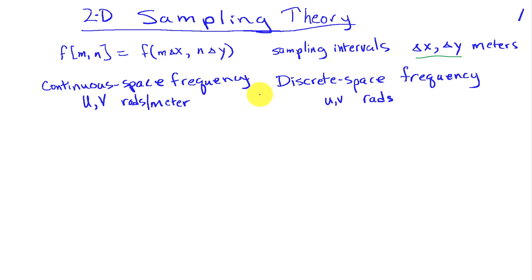So then we have two types of frequency. We have the continuous space frequency, which is associated with the original continuous space image, and we'll use uppercase U and uppercase V to denote the frequencies corresponding to the x and y directions. The units on those will be radians per meter. In discrete space, we have frequency also, and the units on those are going to be radians. We'll use lowercase u and lowercase v to denote the discrete space frequency.